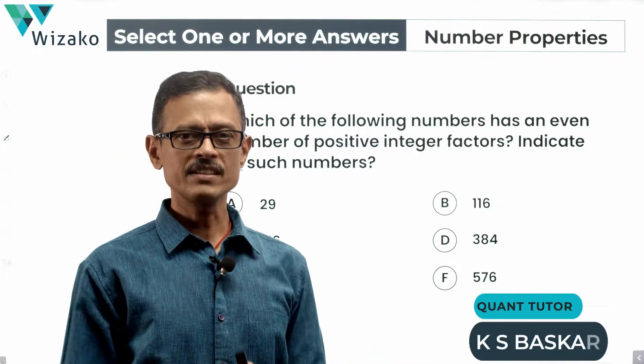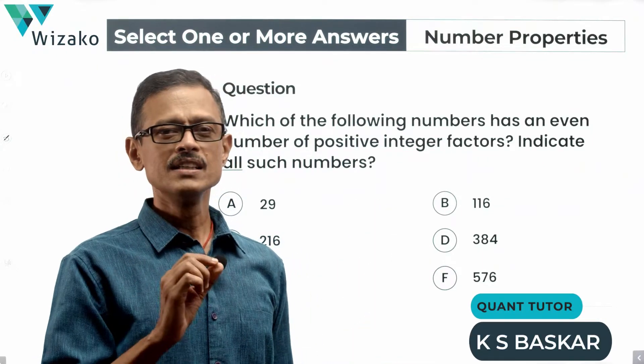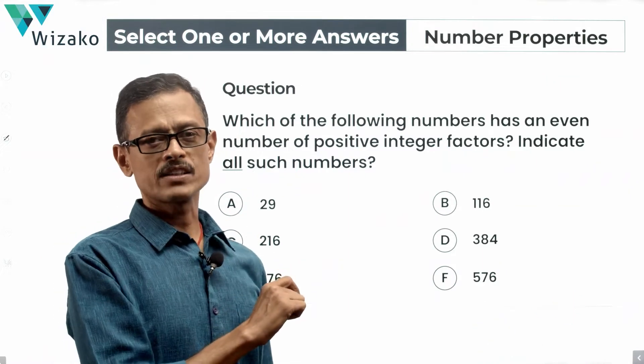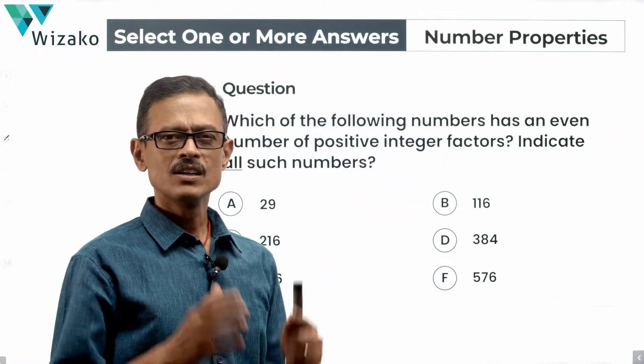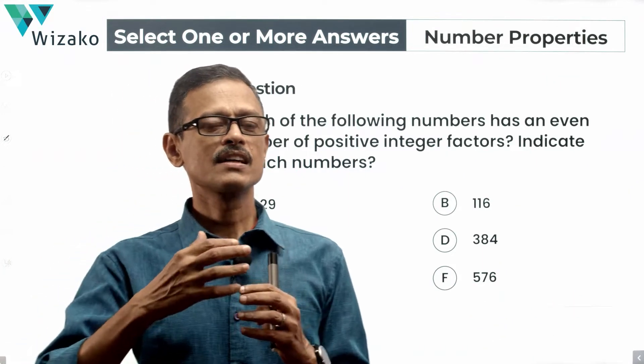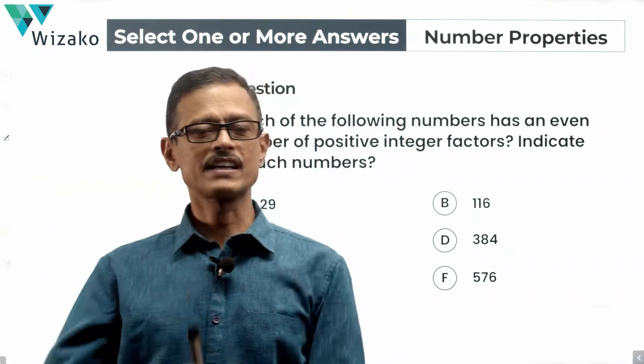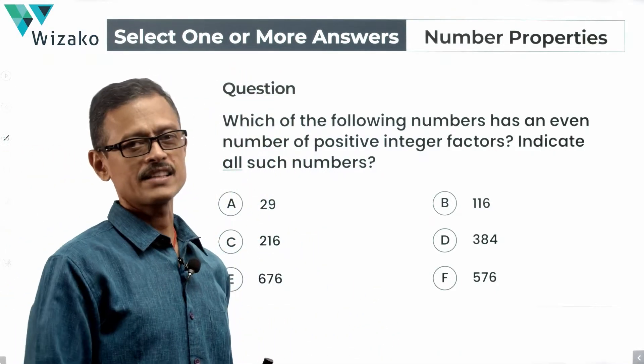GRE quantitative reasoning practice question. It's a medium difficulty question. This is a select one or more answer type question from number properties. Concept tested is number of factors of a number. So number properties, number of factors is the idea tested, number of divisors is the idea tested.